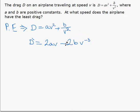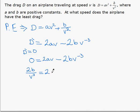If you don't recognize immediately where that came from, try rewriting b over v squared as b multiplied by v to the minus 2. Once we get the derivative, we set the derivative equal to 0. That gives us 0 equal to 2av minus 2b v to the minus 3. Bringing this over, we get 2b over v cubed equal to 2av.